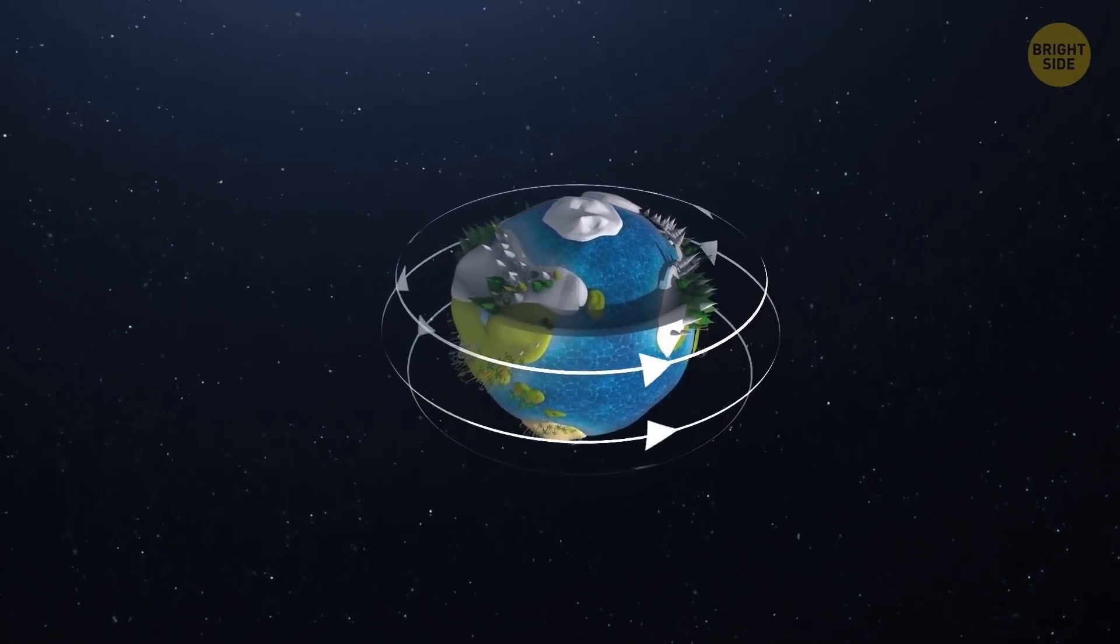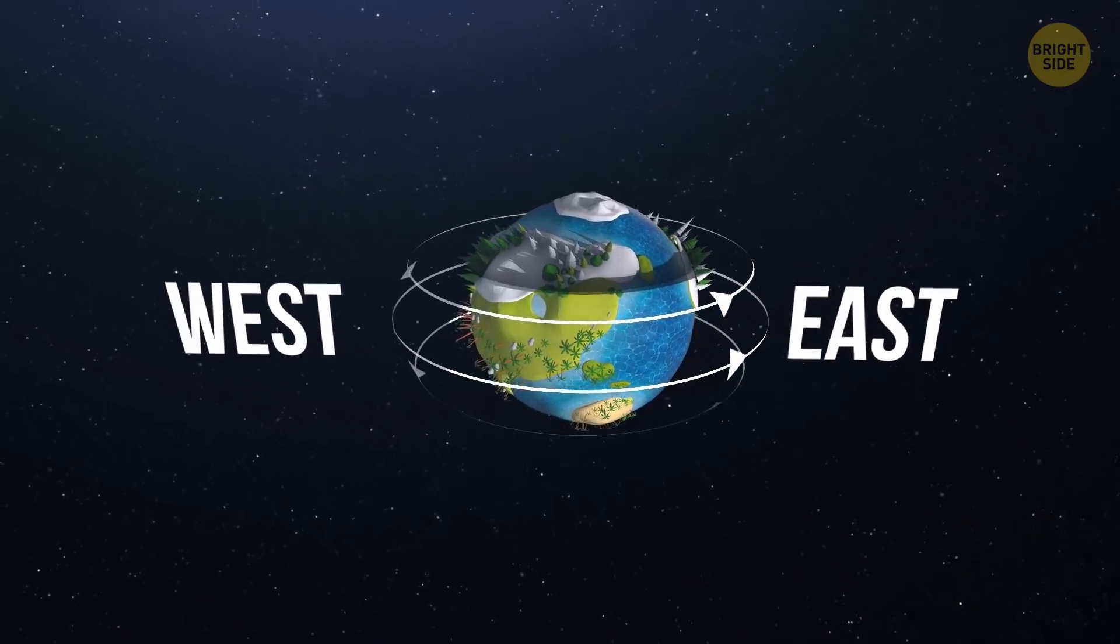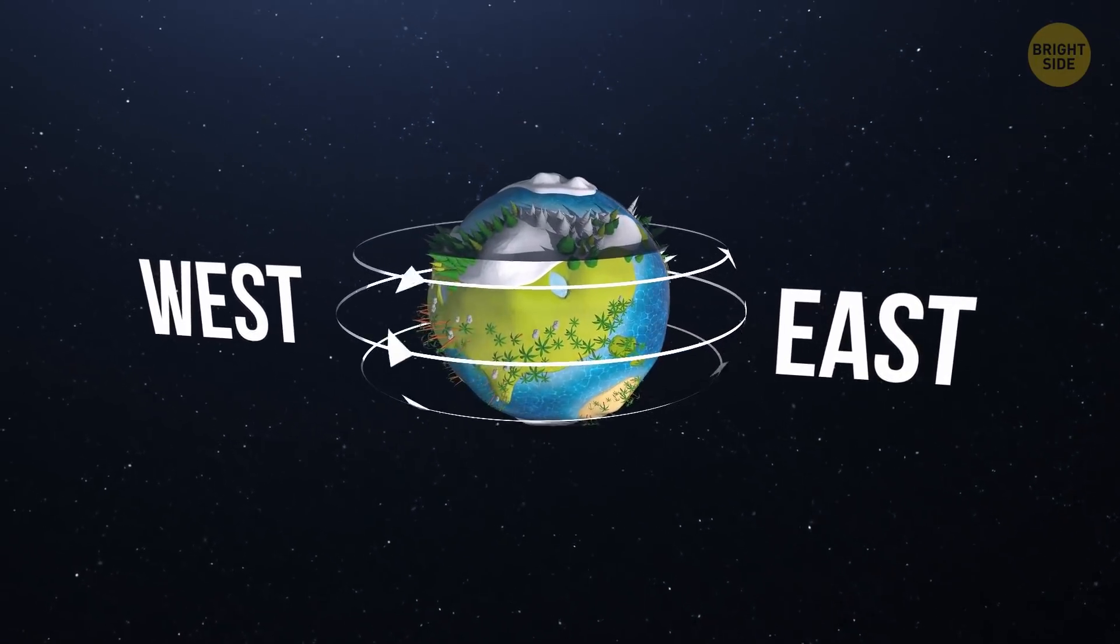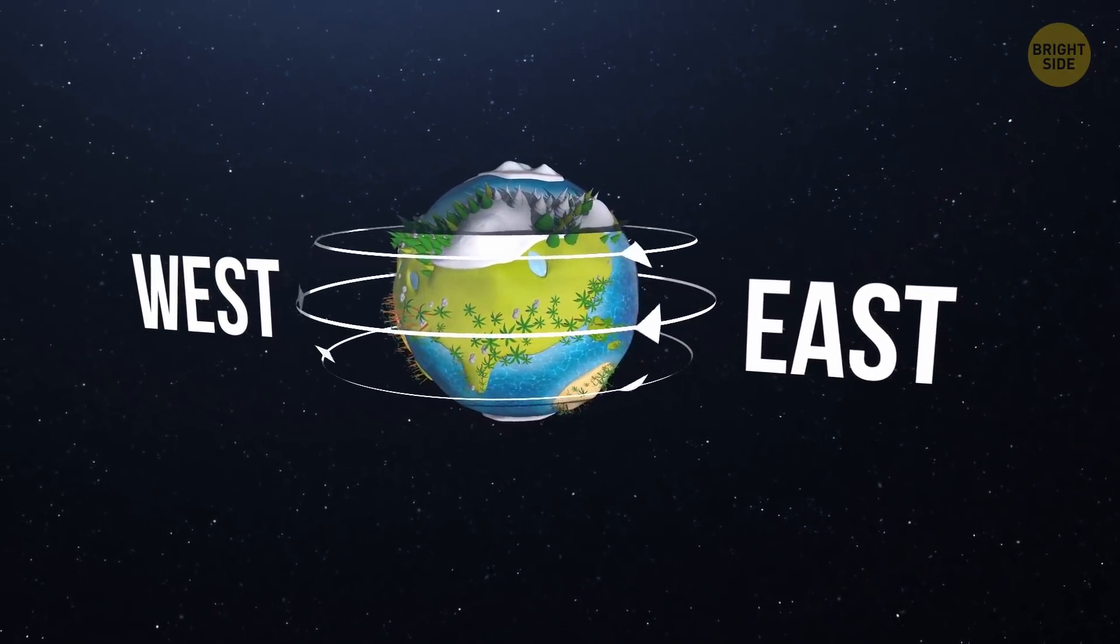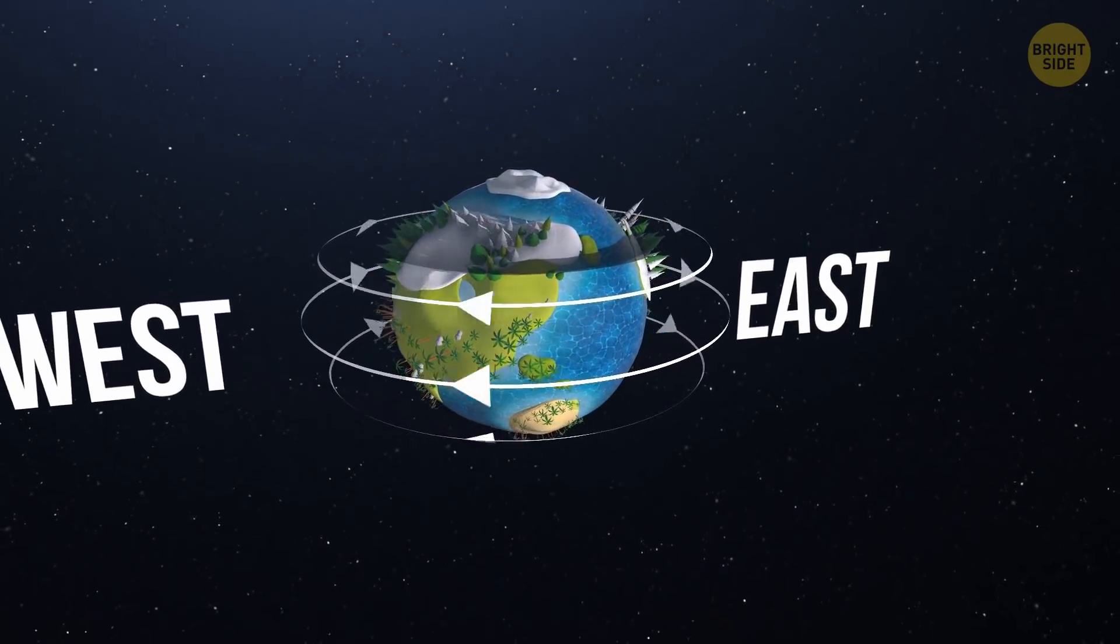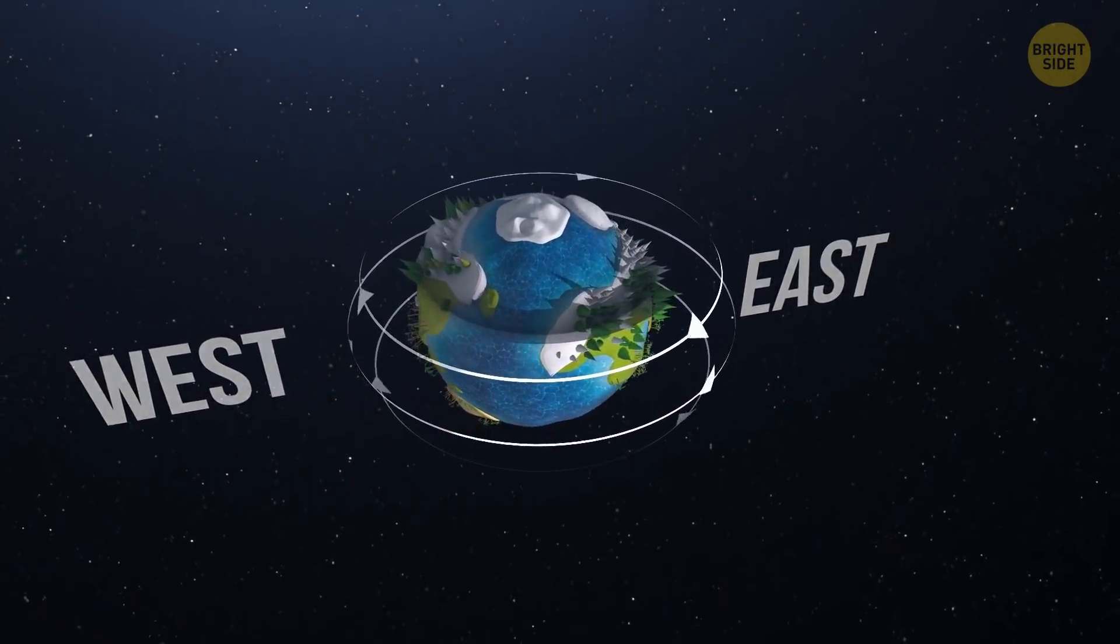Like one day the planet was calmly rotating from west to east, and then, in the blink of an eye, it's already moving backward from east to west. Remember, in the very beginning, I told you about the speed of the Earth's rotation?